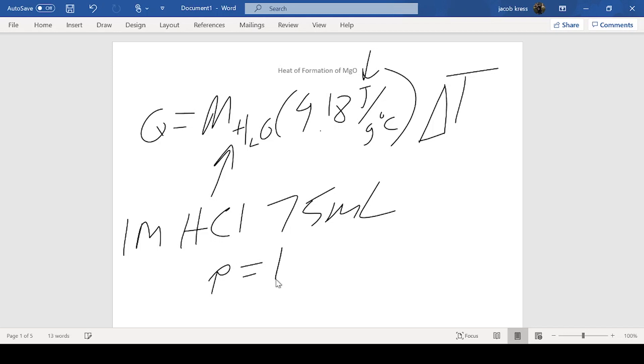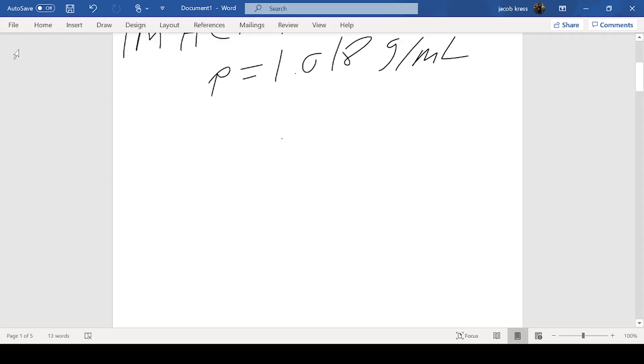For this example, we'll use one molar HCl and we're going to use 75 milliliters of it. The density of our solution is 1.018 grams per milliliter. Using that, we can solve for the mass of our solution. We have 75 milliliters times 1.018 grams per milliliter. The milliliters cancel out leaving us in grams. When you do that on your calculator you get 76.35 grams.